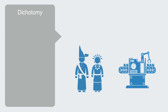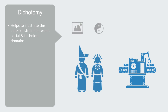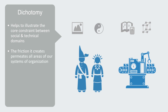This is a somewhat hyperbolic picture of the dichotomy between the social and technical domains, but it helps to illustrate the core constraint here. To sum it up in just a few words, it is the dichotomy between the qualitative and continuous nature of people and the quantitative, discrete nature of technology. This divide permeates all areas of our systems of organization, from the design of user interfaces and healthcare systems to people's uneasy feeling about robotics.